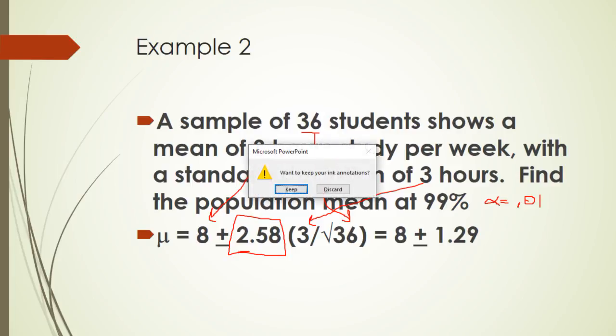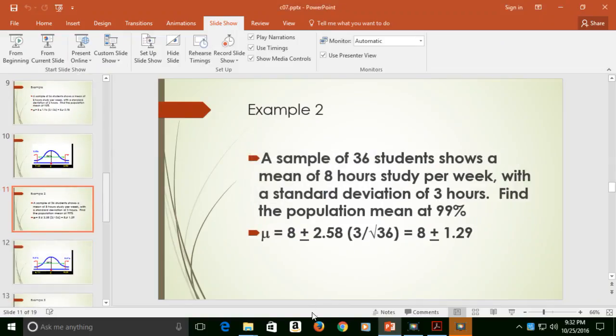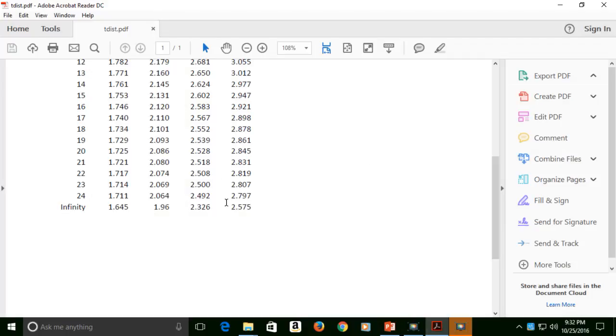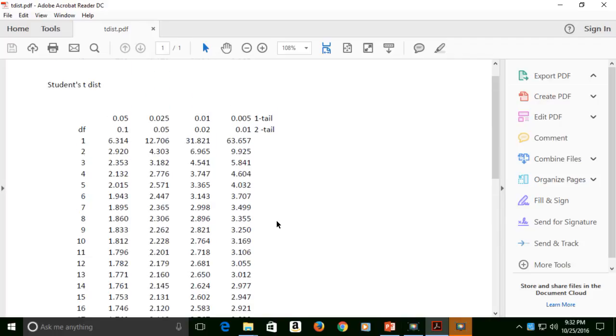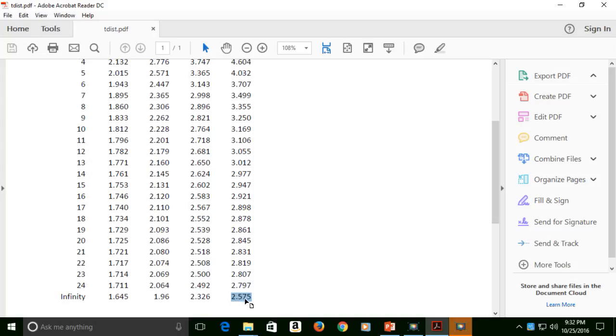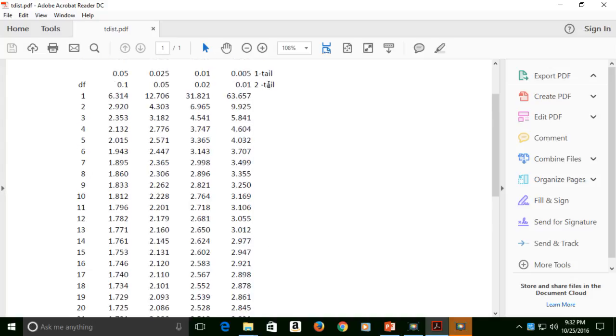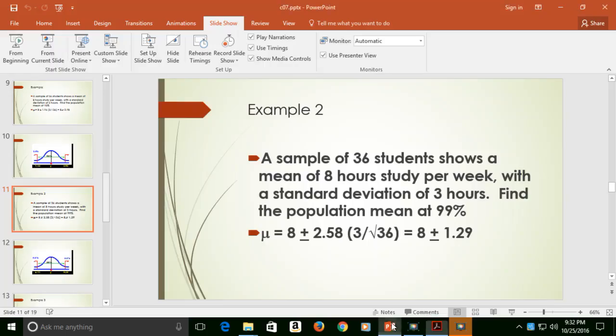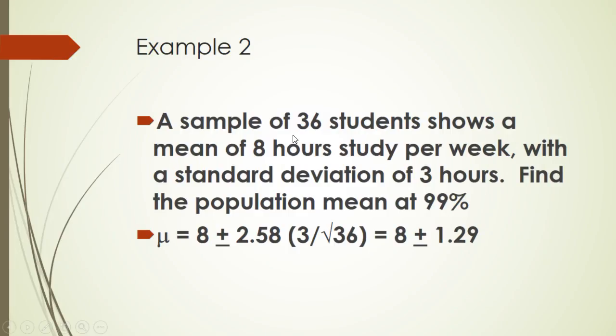So again, we hit the escape button, discard that, and call up our table. We see 2.575, which I round off to 2.58. That is 2 tail, 0.01, 2.575.